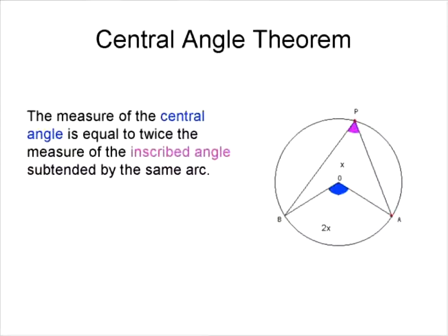If we look at our picture down here, we have an arc AB and this arc is subtended by both the purple angle, the inscribed angle, and it's subtended by the central angle, the blue angle.